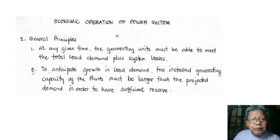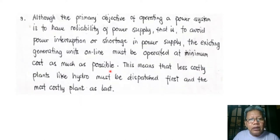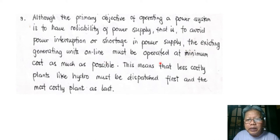We have to consider the general principles. Number one: at any given time, the generating units must be able to meet the total load demand plus system losses. Second: to anticipate growth in load demand, the installed generating capacity must be larger than the projected demand. Third: although the primary objective is reliability of power supply — to avoid interruption or shortage — the existing generating units must be operated at minimum cost as much as possible. This means less costly plants like hydro must be dispatched first, and the most costly plants like diesel last.